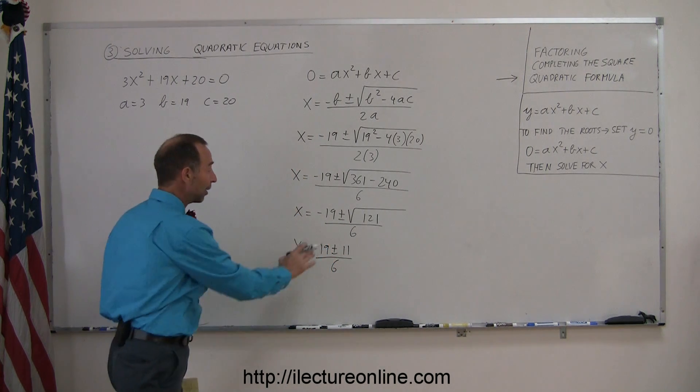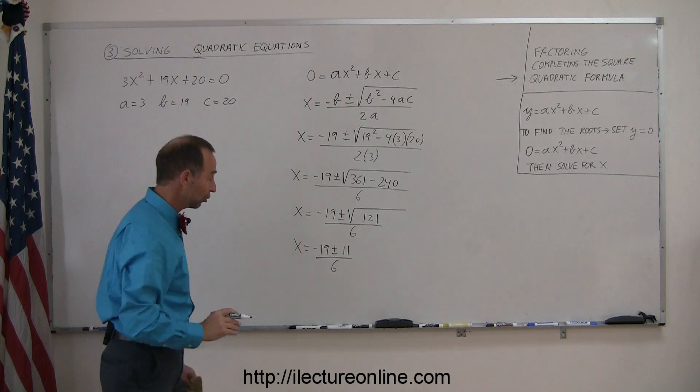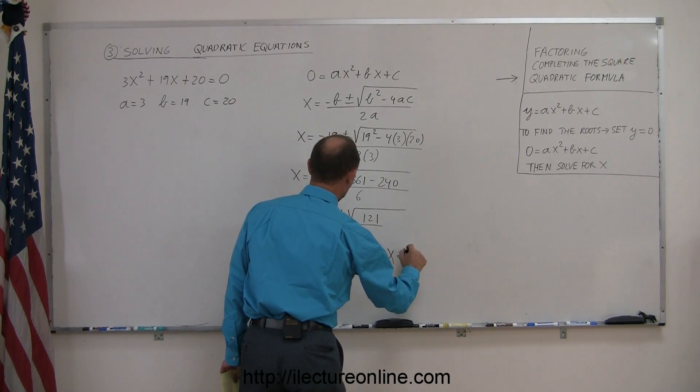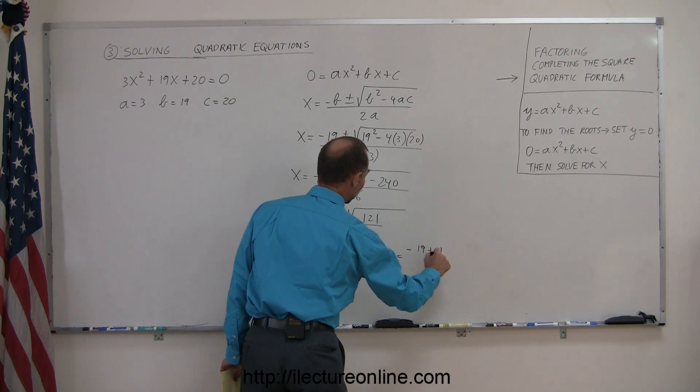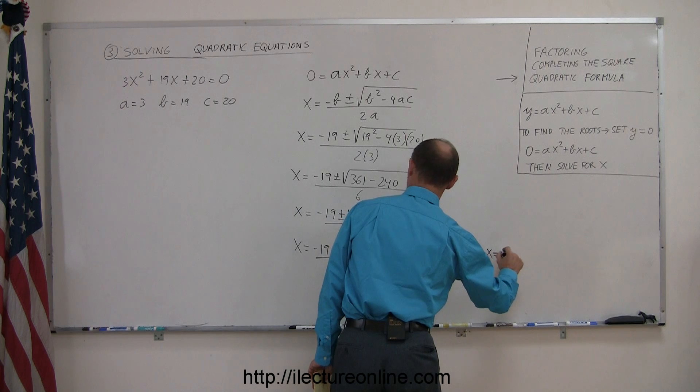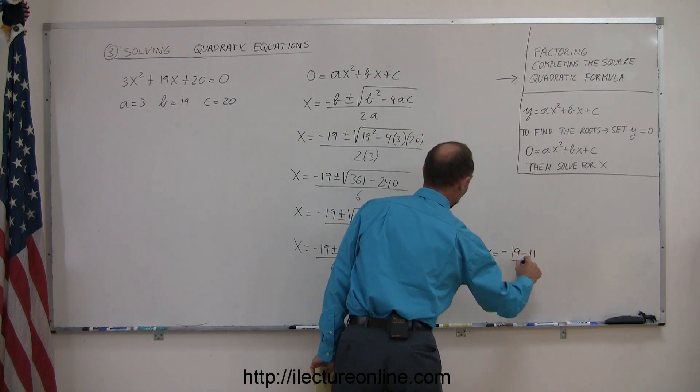And so that means that we either have the plus or the negative as our solution, so we can write this as x is equal to minus 19 plus 11 over 6, or x is equal to minus 19 minus 11 over 6.